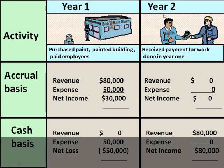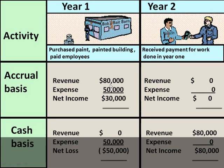We have two years of books here shown very simplistically: accrual accounting year one and year two, cash accounting year one and year two. Let's say that client committed to pay you $80,000 to paint the building. Let's say your expenses — paint, cranes, equipment rentals, etc. — came to $50,000. Using accrual accounting, we would have booked a debit to accounts receivable and a credit to service revenue for $80,000. You would have debited all those expense accounts and credited cash for $50,000. And you would have had net income of $30,000 — well over 30% net income. Not bad for a first year.